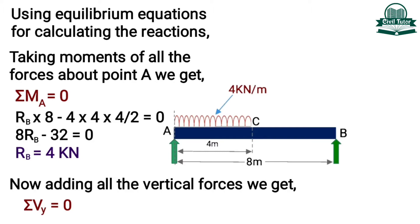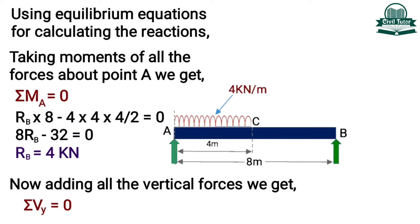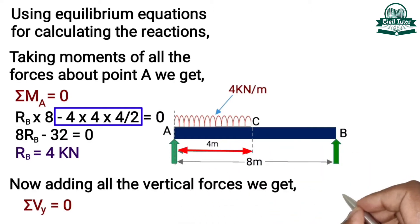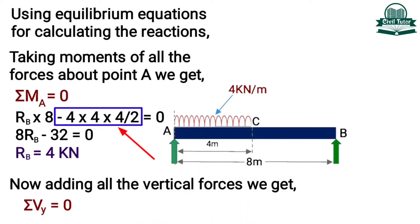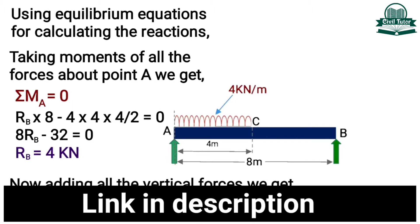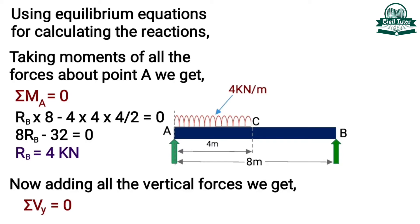The resultant moment about point A will be the summation of moments due to support reaction RB — i.e., RB into distance 8 meter — and moment due to the UDL, i.e., minus 4 into load distance 4 meter into 4 by 2. This moment due to UDL is taken negative since the load is acting downward and it will tend to rotate point A in the clockwise direction. Clockwise moments are taken as negative while going from right to left, and anticlockwise moments are taken as positive as per the sign conventions.